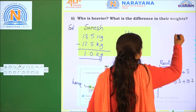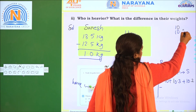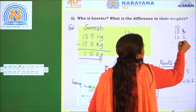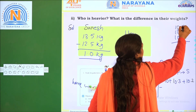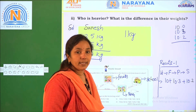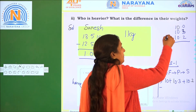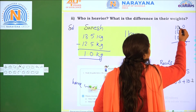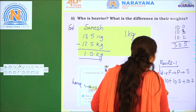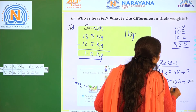Adding Route 1 distances: 10 plus 10.3 plus 10.2. The hundredth place is 0. 3 plus 2 is 5. Total is 30.5 kilometers for Route 1.